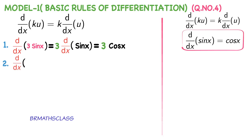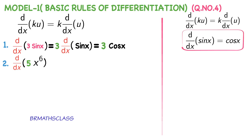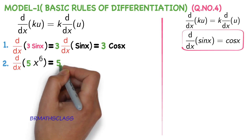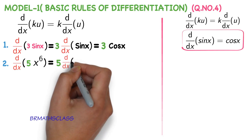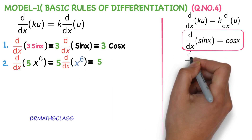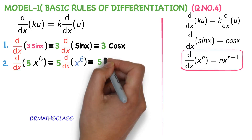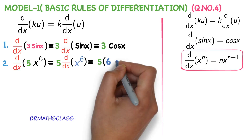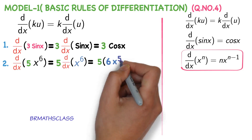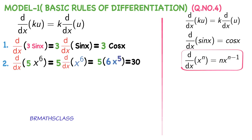We will see one more example. d by dx of sin x is cos x. You compare this with ku: k is 5, u is x power 6. d by dx of 5 into x power 6 — how you will write? 5 into d by dx of x power 6. You must know this formula: d by dx of x power n is n into x power n minus 1. Derivative of x power 6 is 6 into x power 6 minus 1, that is 6x power 5. So, derivative of 5 into x power 6 is 30 into x power 5.